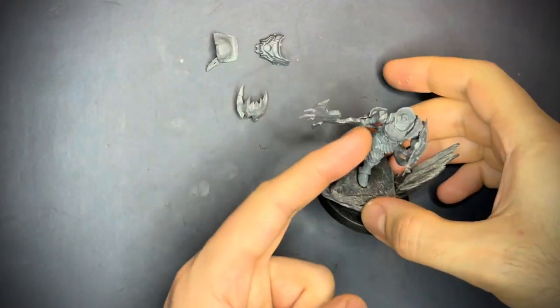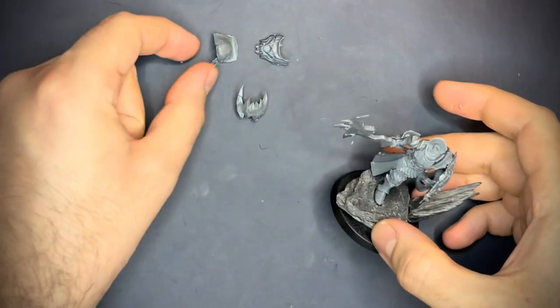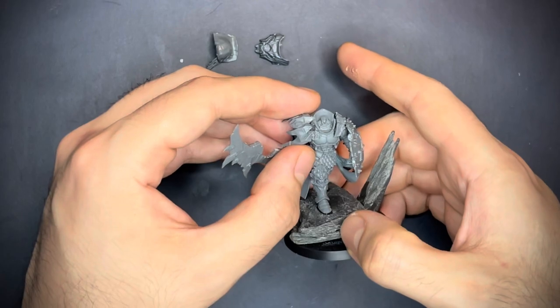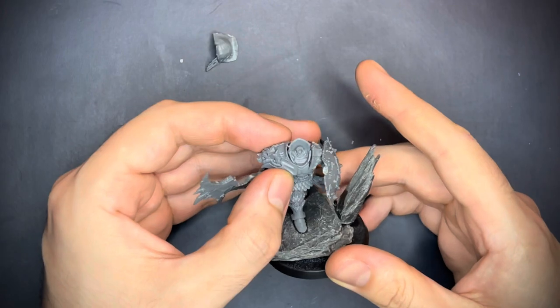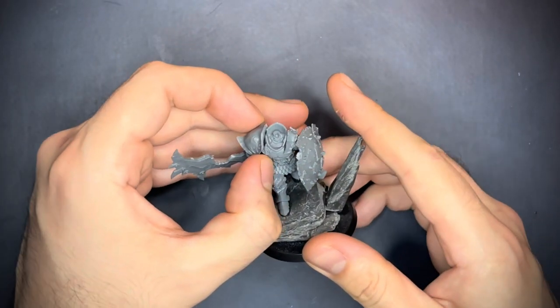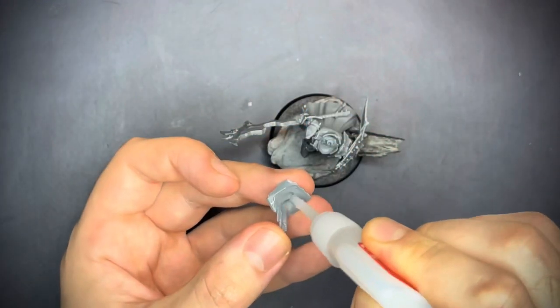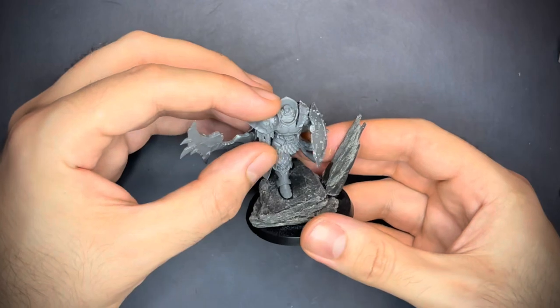So next we're going to go for the other shoulder pad to cover up that nice gap there. So we've got these three here. This one looks a little bit too rugged for my liking. This one too archaony for me I think. And this one I think works perfectly. So we're going to go for that one. So chuck some glue on. And whack it on. There we go.